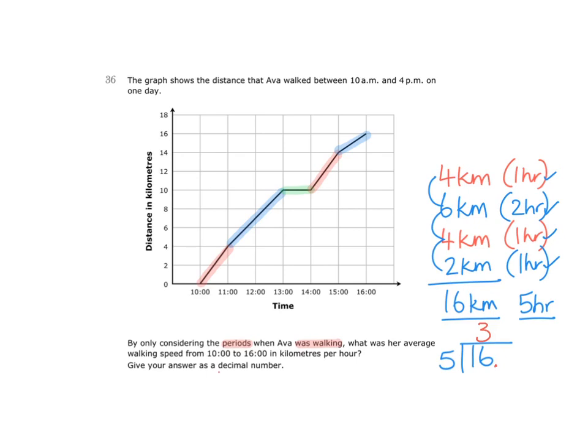Because we know we're giving the answer as a decimal number, we should give some decimal places. So because 3 fives are 15 and we have 16, it means a remainder of 1. We then say how many times does 5 go into 10? 5 goes into 10 twice.